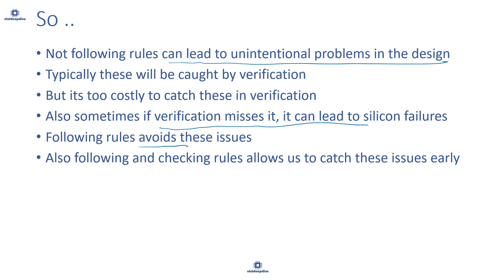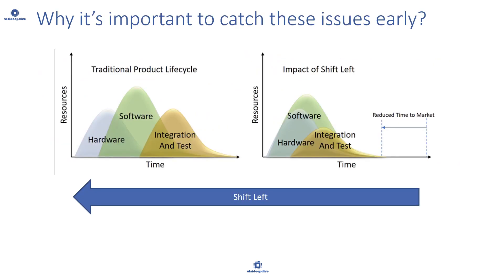Following rules and guidelines allows us to catch issues early. In a traditional product life cycle, you start with hardware design, then software, then integration and test. But if you start doing all these things in parallel, your time to market can be reduced. This method of starting things early is known as shift left.